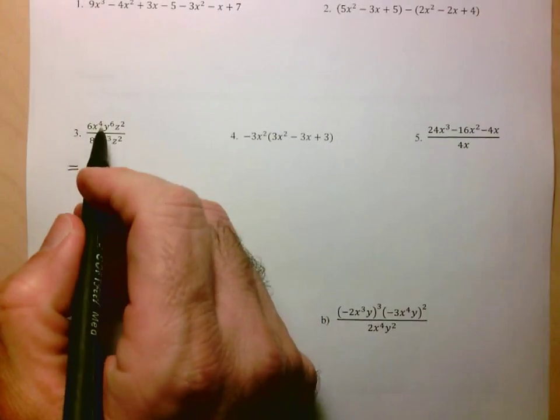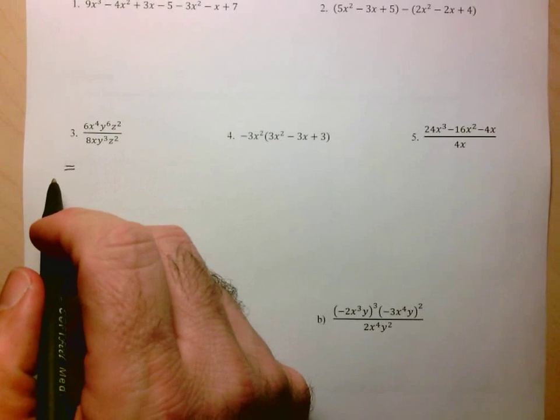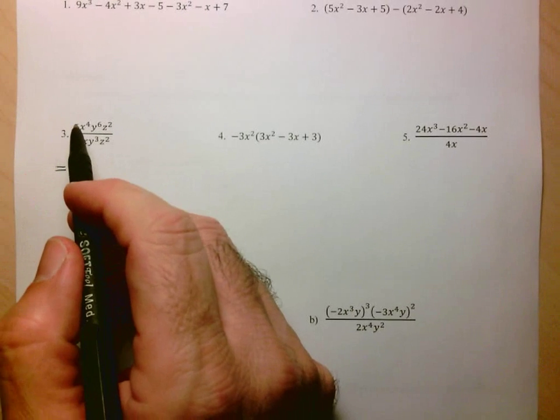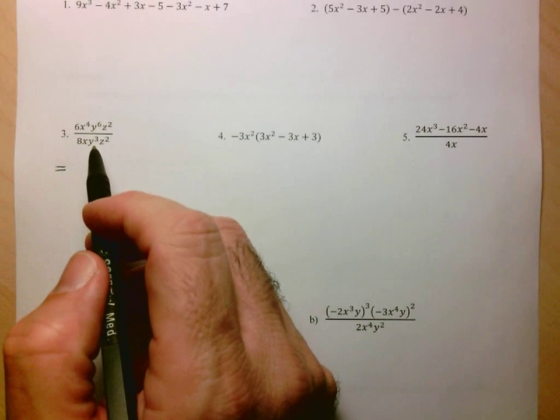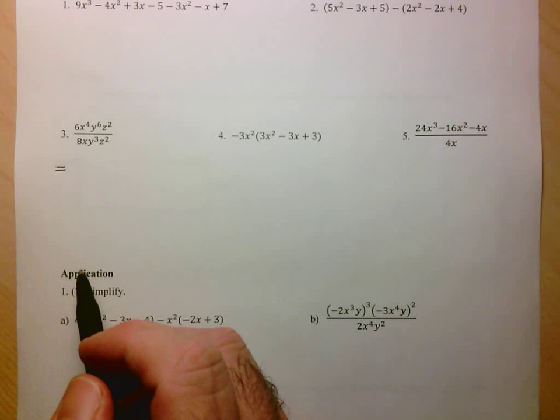Here we're dividing 2 monomials. The way in which we divide monomials is we divide the numbers and then we divide the powers with the same base using the exponent rules.